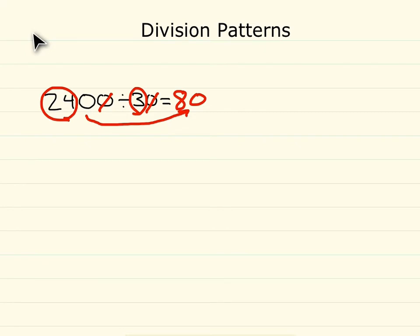You can also think of this problem as 30 times some number equals 2400. Well, 3 times what number equals 24? Well, 3 times 8 equals 24, and now we need to even out our zeros.